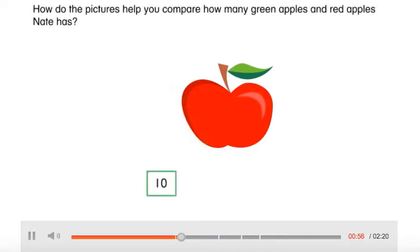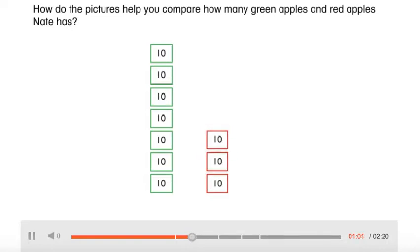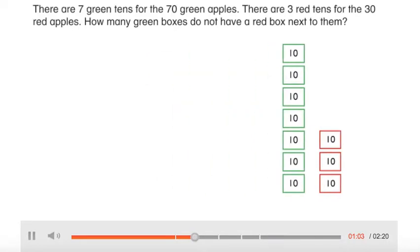How do the pictures help you compare how many green apples and red apples Nate has? There are seven green tens for the 70 green apples. There are three red tens for the 30 red apples. How many green boxes do not have a red box next to them?